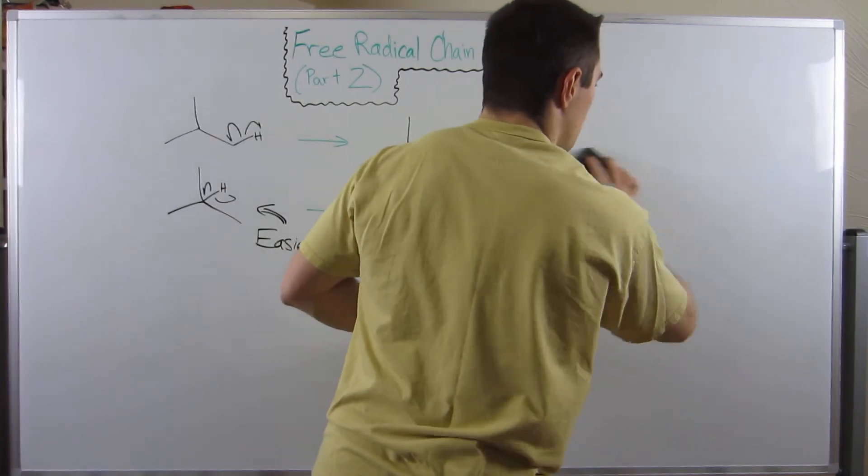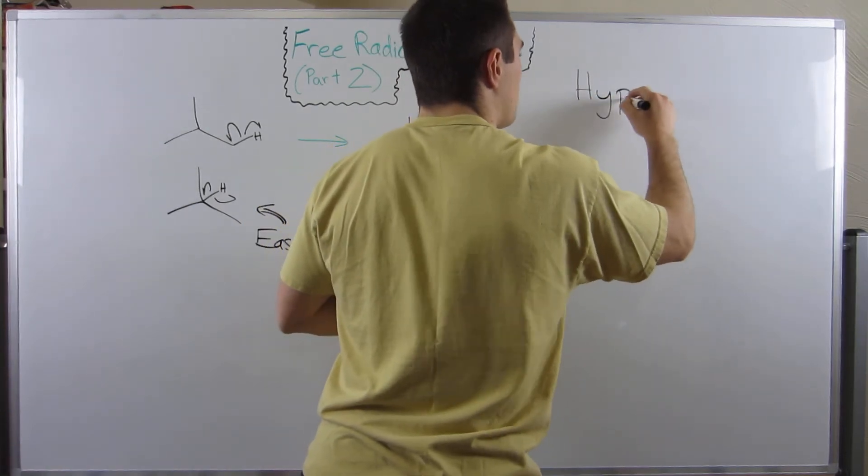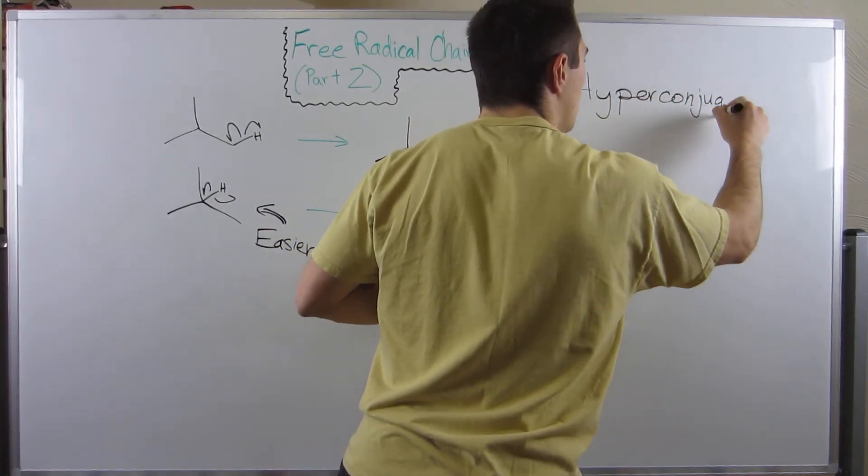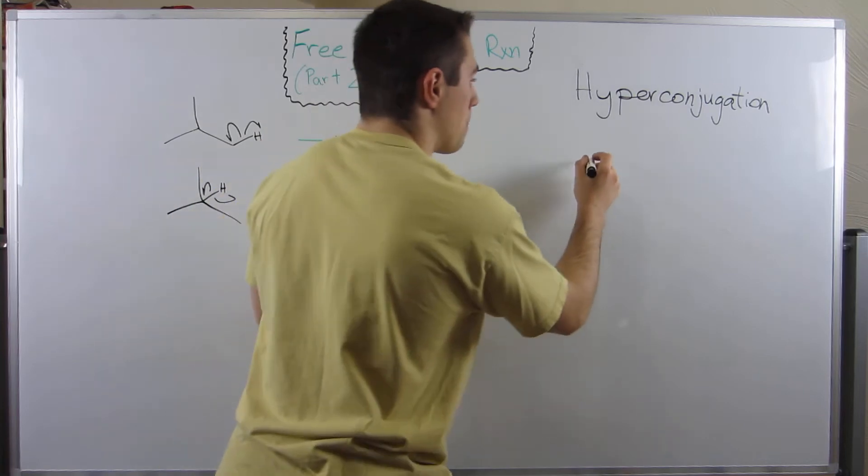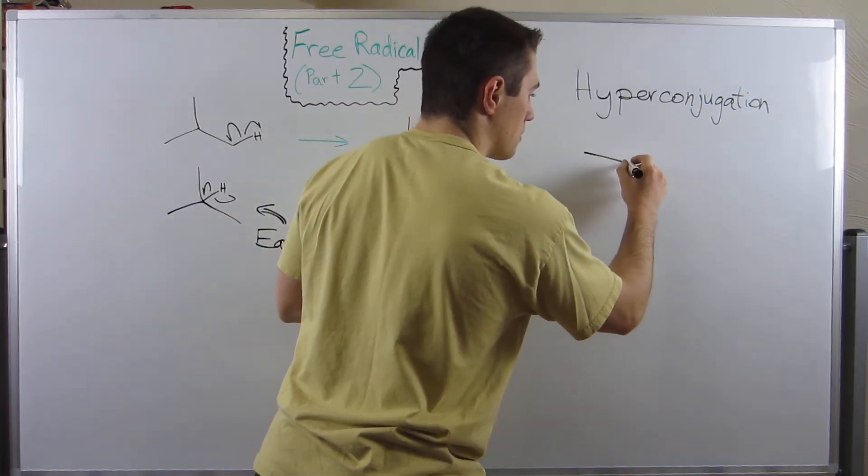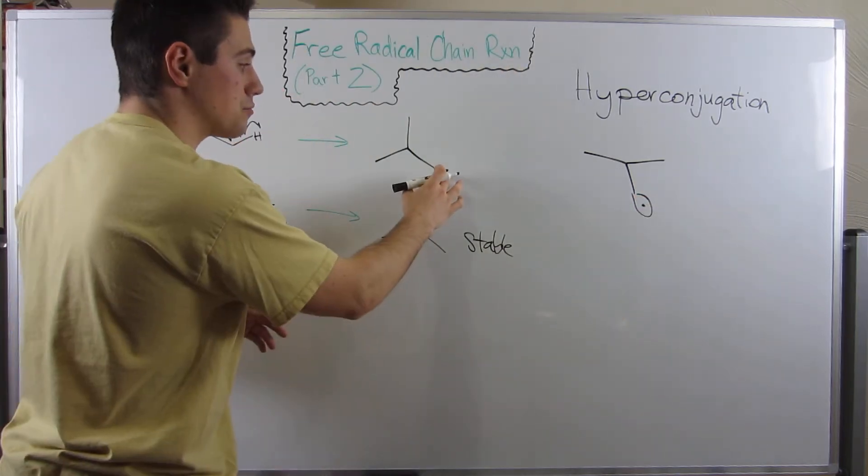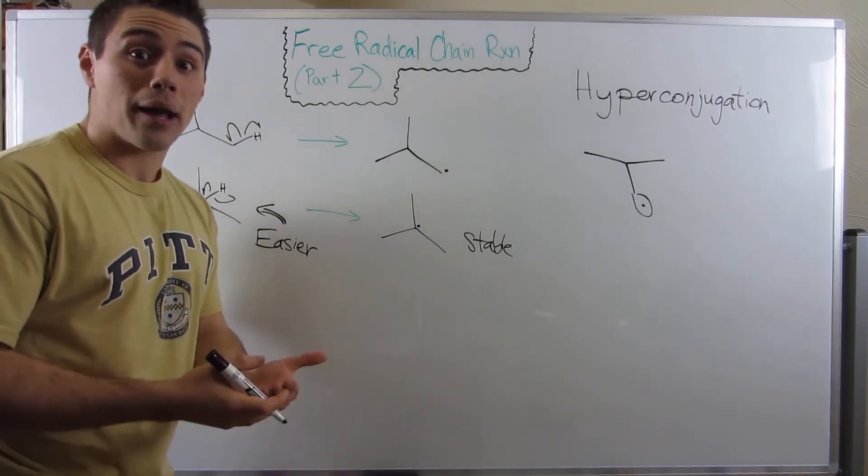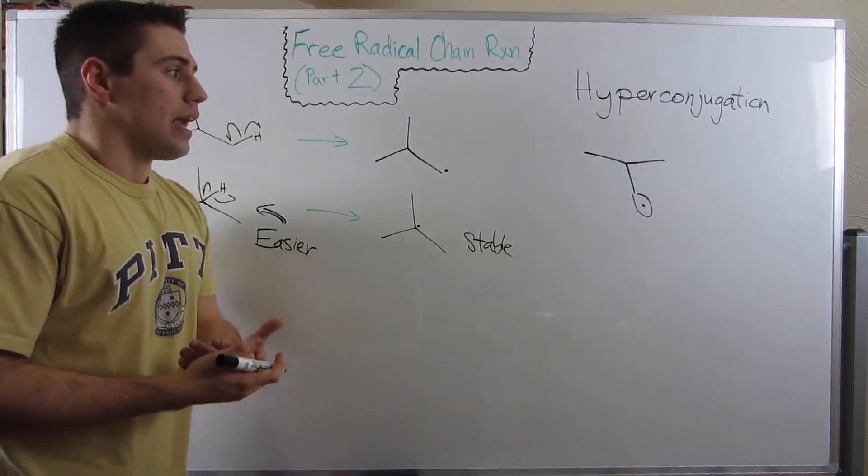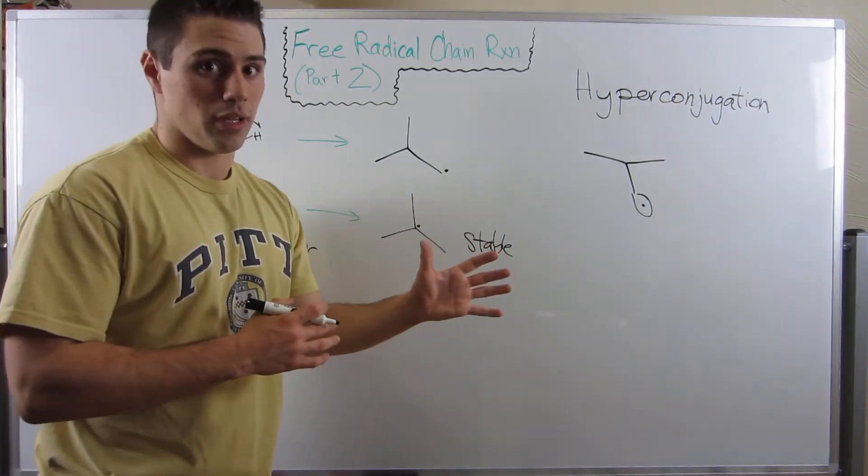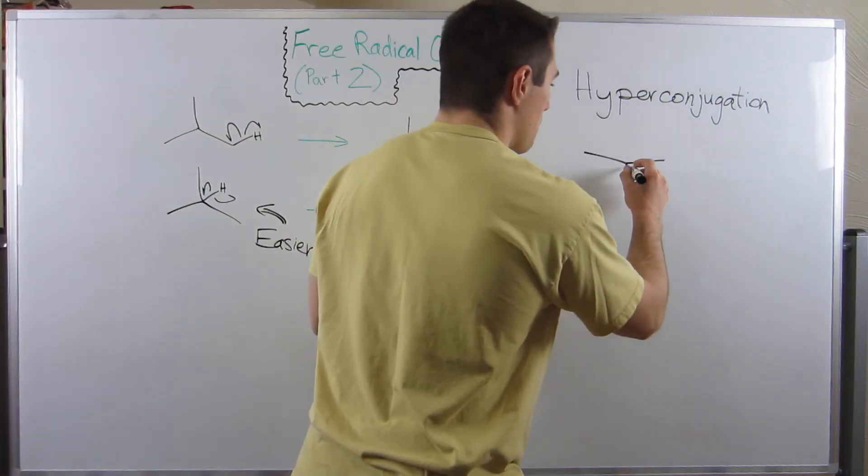Here, there's a concept called hyperconjugation, big word, not as scary as it sounds, hyperconjugation. And here's what hyperconjugation means. Let's look at these two radicals. I'm going to draw them on like a side view. If we look at this carbon's hybridization, he's actually sp2 hybridized. This radical, this lone radical, resides in an unhybridized p orbital. However, this isn't like a pi bond situation. We don't have anyone else that has an unhybridized p orbital.